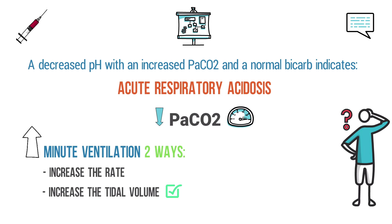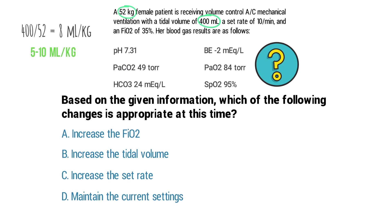So since the tidal volume is set appropriately, that means that there is only one possible way to increase the minute ventilation. Now we can be certain that in order to lower the PaCO2, we need to increase the rate. So by going through the question, taking what they give us, and breaking it down step by step, we could determine that the correct answer has to be C: increase the set rate.